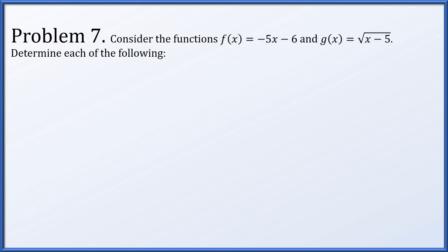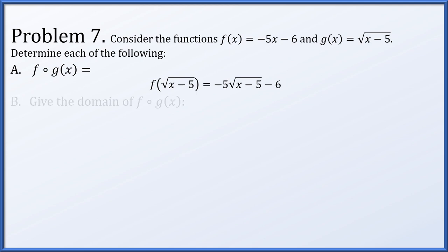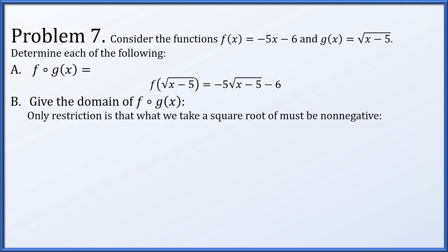Problem 7: consider f of x equals negative 5x minus 6 and g of x equals the square root of x minus 5. For f of g of x, we plug root x minus 5 into f, giving negative 5 times the square root of x minus 5, all minus 6. The domain requires x minus 5 to be non-negative, so x must be greater than or equal to 5.